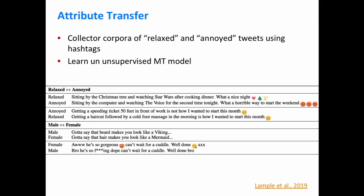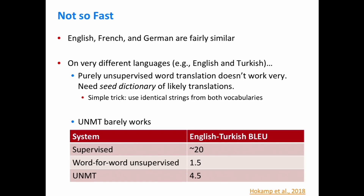Another fun application of an unsupervised MT model is attribute transfer. You can take collections of text split by any attribute you want — for example, going on Twitter and using hashtags to decide which tweets are annoyed and which are relaxed — and treat those two corpora as though they were two different languages. You can train an unsupervised MT model to convert from one to the other. The model does a pretty good job of minimally changing the sentence, preserving most of its original semantics while changing the target attribute.